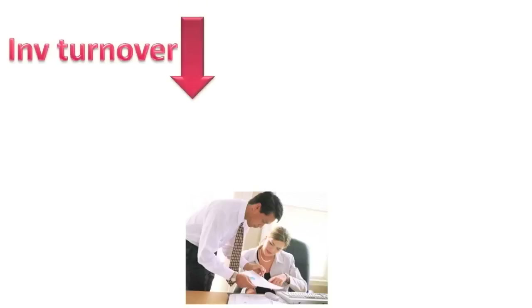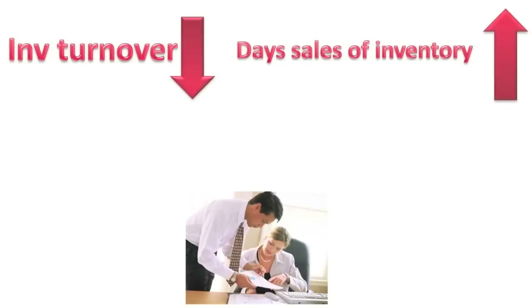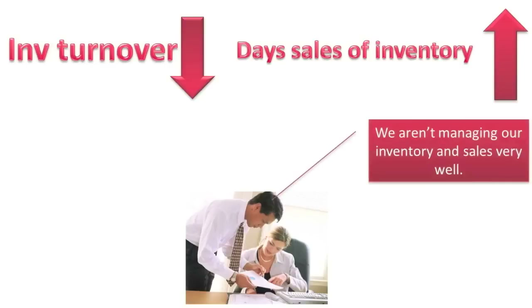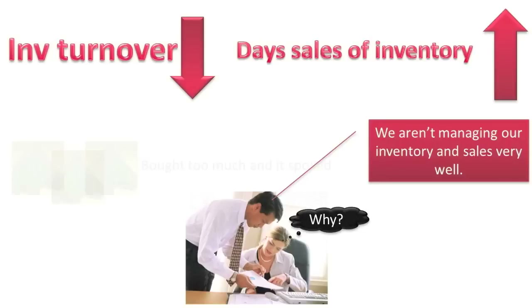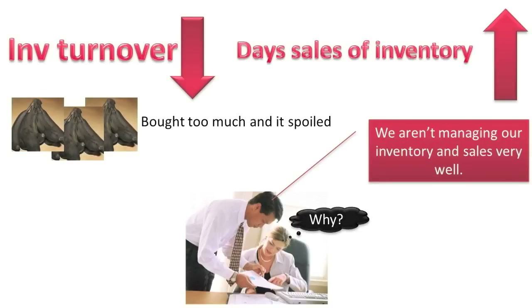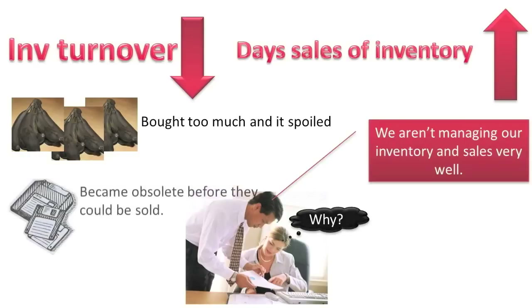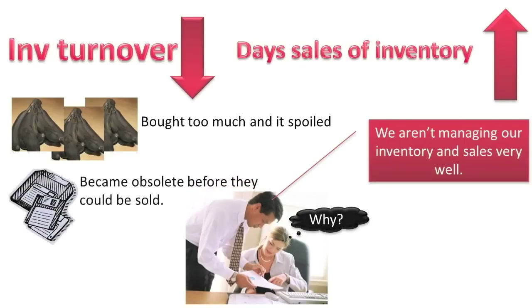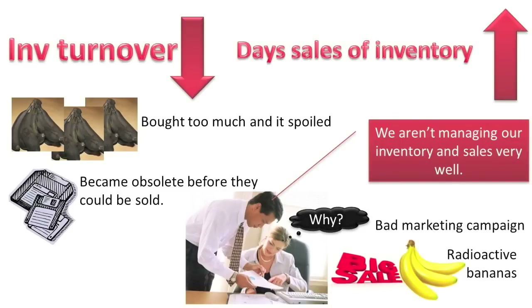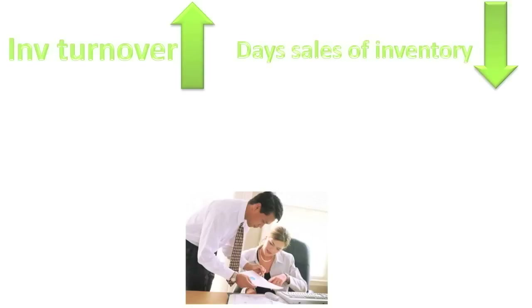In general, a low inventory turnover ratio and a high number of days' sales of inventory can be a sign of ineffective and inefficient inventory and sales management. For example, management may be purchasing or producing too much inventory based on incorrect estimates of customer demand, possibly resulting in inventory spoilage; holding inventory too long rather than discounting it, possibly resulting in obsolescence; or using an ineffective sales and marketing strategy, possibly resulting in reduced sales. In general, a high inventory turnover ratio and low days' sales of inventory is a sign of effective and efficient inventory and sales management.